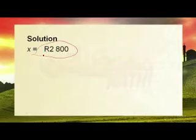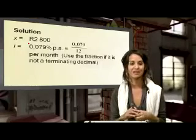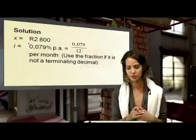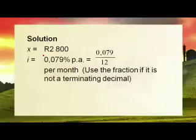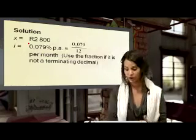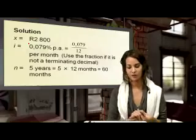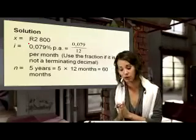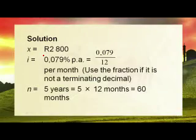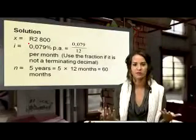The monthly payment X is 2,800 rand. The interest rate was 7.9%, which we divide by 100 to get 0.079 per annum, then divide by 12 for monthly use. The time period is five years, which we multiply by 12 to get 60 months. We now have everything to plug into the F formula.